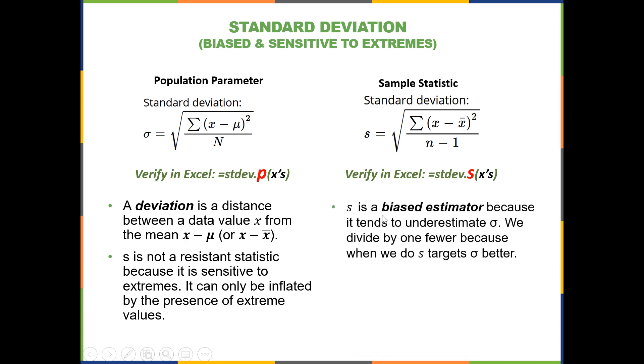We also know that S is a biased estimator because it tends to underestimate sigma. And we divide by one fewer because when we do, S targets sigma better. And the sample variance S squared is an unbiased estimator because it targets sigma squared. So that's interesting. We have a biased estimator S that doesn't target sigma reliably, but the squared version of S does target the squared version of sigma.